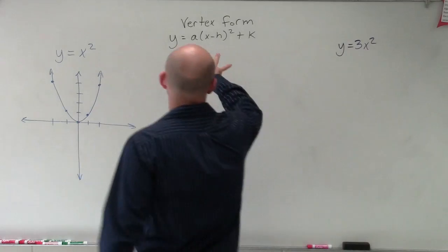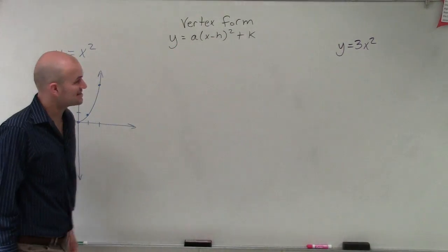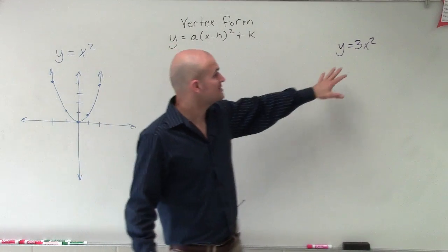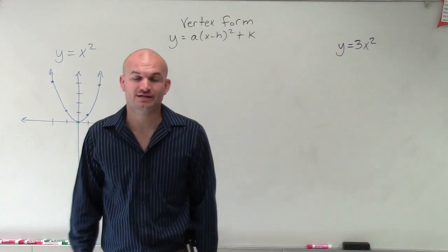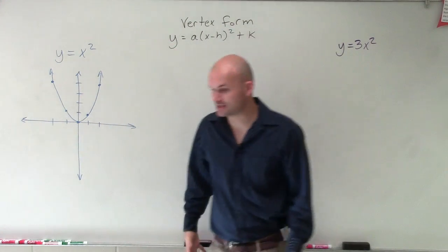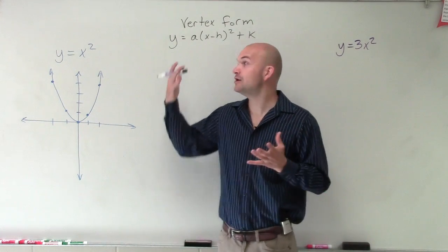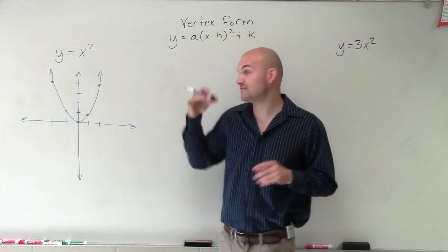Welcome. So what I have is vertex form, y equals a times x minus h squared plus k. And what I want to do is show you how to use vertex form to help us graph the equation y equals 3x squared. Now, the important thing about vertex form is we know that we're going to have transformations and also dilations when we have an equation that's in vertex form.